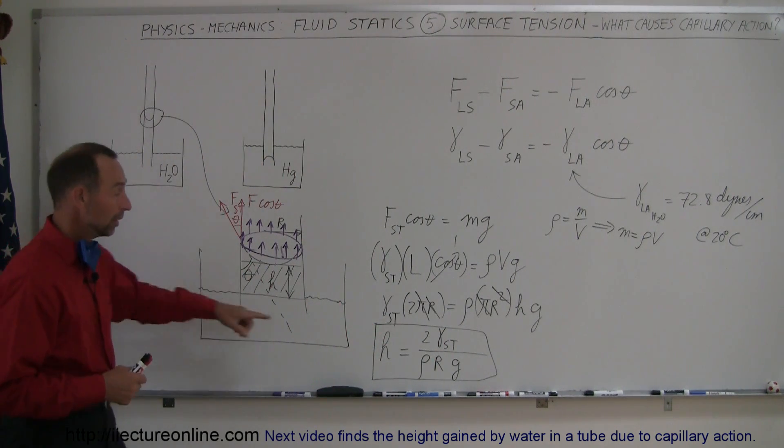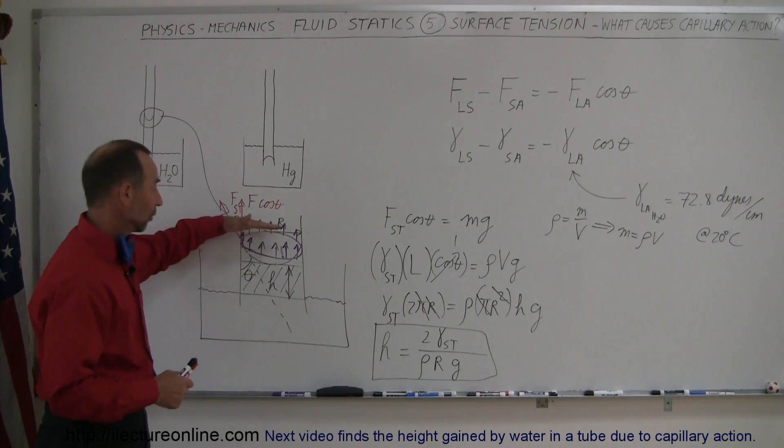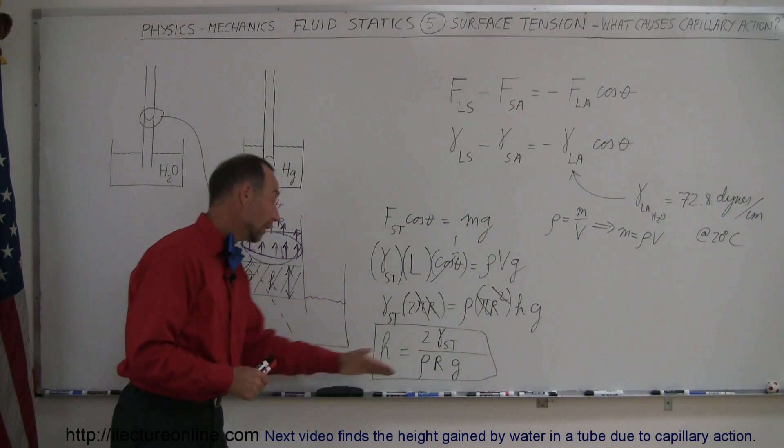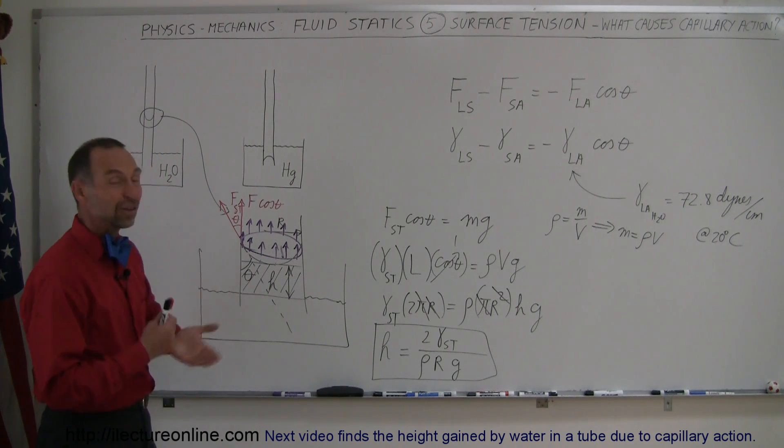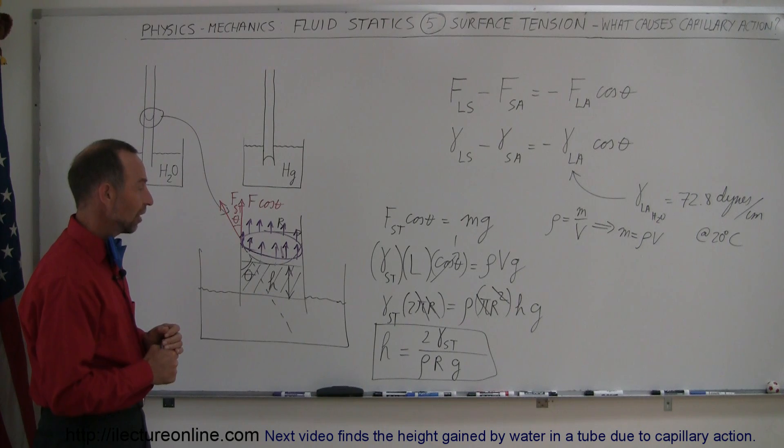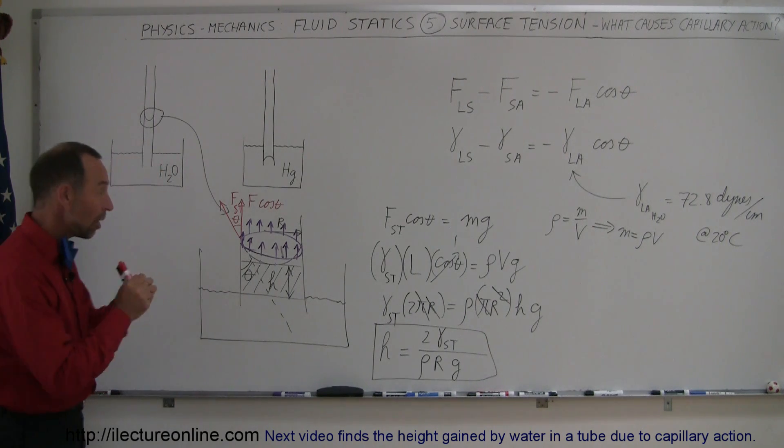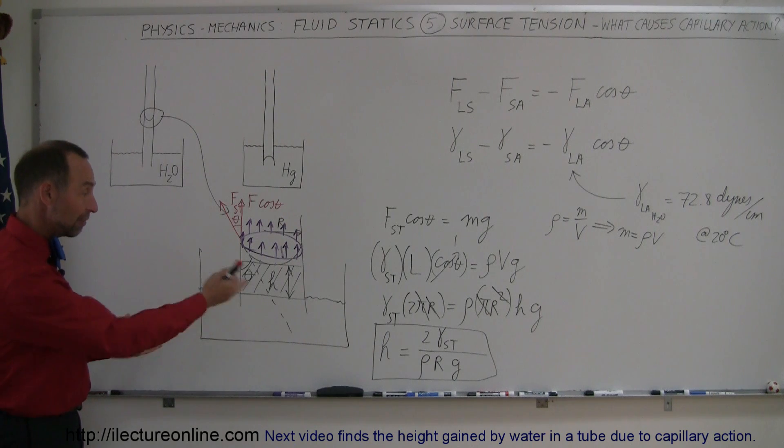Now what happens is if you heat the water, this will go down, and so the height will drop. If you put some soap in the water, this will go down, and the height will drop as well. So it does get affected by the coefficient of surface tension. But that's how capillary action works in very small little tubes, and that's how you find how high it will go in the tube.